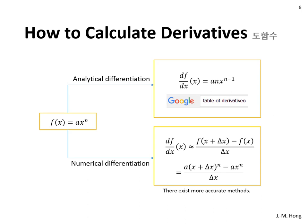There are two ways to obtain derivatives. For a simple function like ax to the n, one way is analytical differentiation — done by hand with pencils. In this case, df/dx equals a times n times x to the n minus 1. In most cases, you can find derivatives by Googling a table of derivatives.